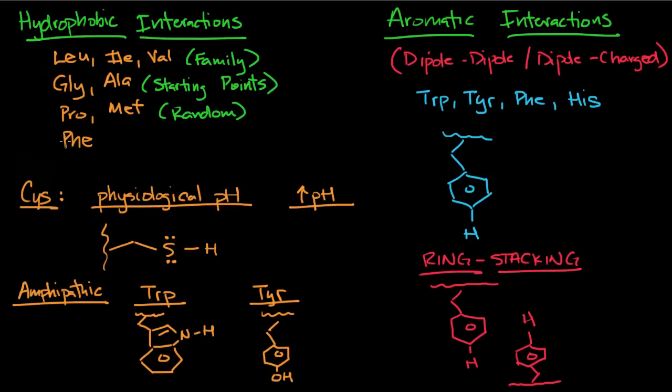Cysteine I put a little separately because at physiological pH, the sulfur is going to be pretty much nonpolar. But if you raise the pH, if you raise the pH above its pKa, what can happen is the sulfur can become negatively charged. You can deprotonate the cysteine, and when you deprotonate the cysteine, it's going to be negatively charged, and then it's not going to participate in hydrophobic interactions.